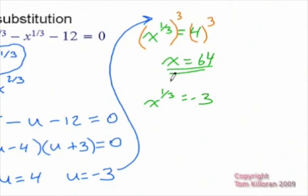And again, down here, we're going to raise both sides to the third power to get rid of that one-third power. And what we'll find is x equals negative 3 cubed, which is negative 27.